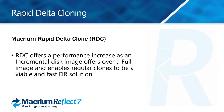Rapid Delta Cloning: Macrium Rapid Delta Cloning offers a performance increase over a full image — similar to an incremental disk image — and enables regular clones to be a viable and fast disaster recovery solution. Macrium Rapid Delta Cloning is there to increase that speed and performance when taking backups.